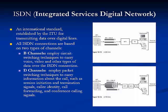ISDN, or Integrated Services Digital Network, is a dedicated digital network transmission method that runs over PSTN lines. It comes in three varieties: PRI, BRI, and B-ISDN. BRI, which offers a maximum throughput of 128 kilobits per second, is a popular choice among telecommuters.